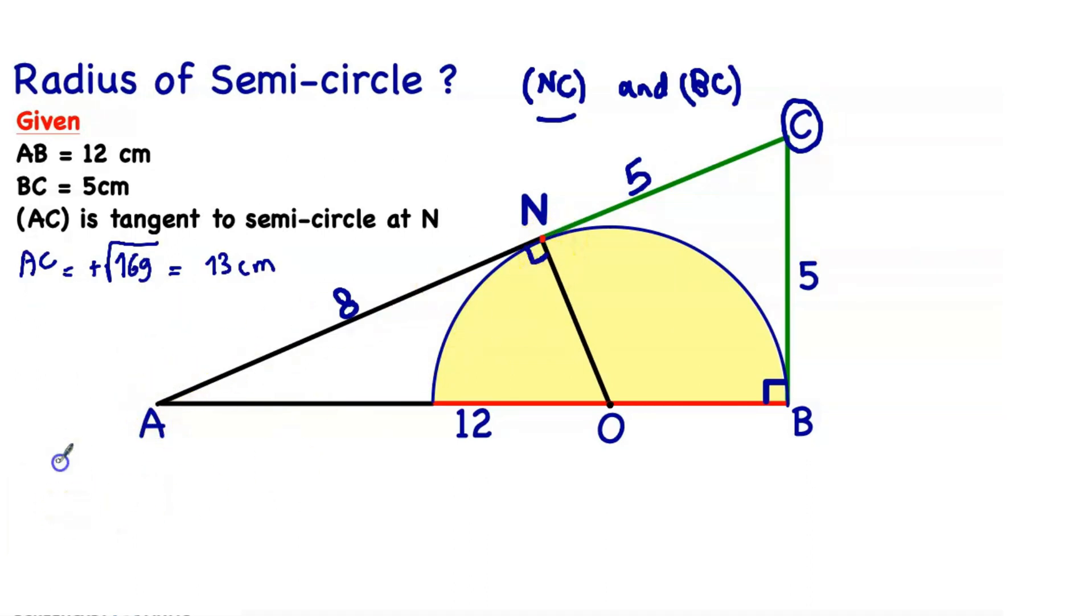Now let's focus on the two triangles ANO and ABC. We have angle N equal to angle ABC, equal to 90 degrees. And angle A is common between these two triangles, so the two triangles are similar.